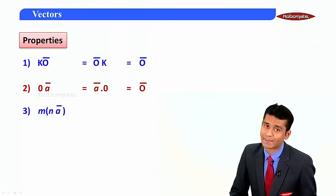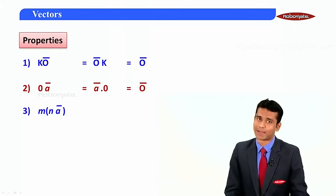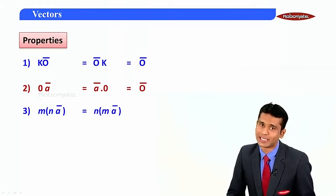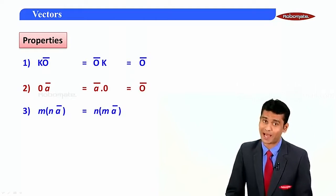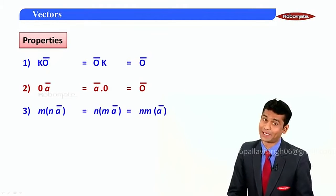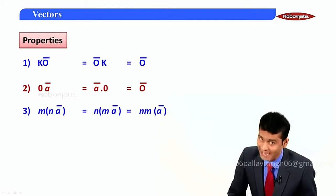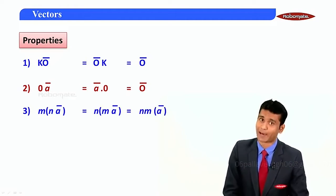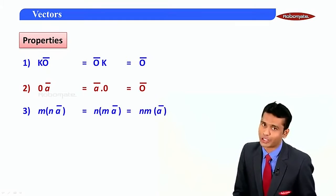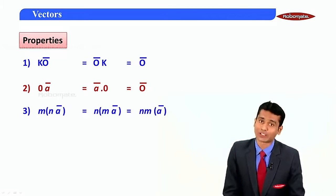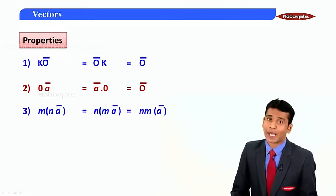The third property states that m into (n·a-bar) is equal to n into (m·a-bar), which is equal to mn into a-bar. For example, two into (three·a-bar), or three into (two·a-bar), or six·a-bar — they are all one and the same.